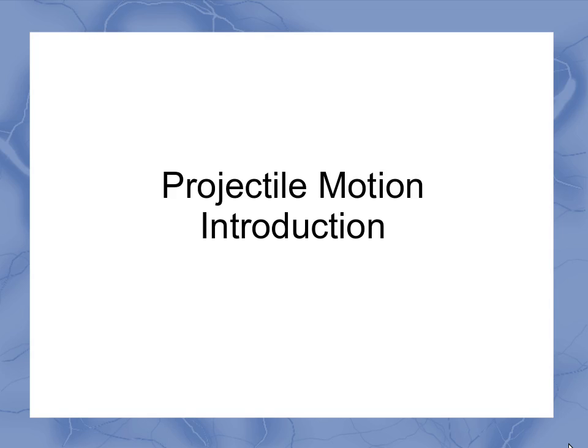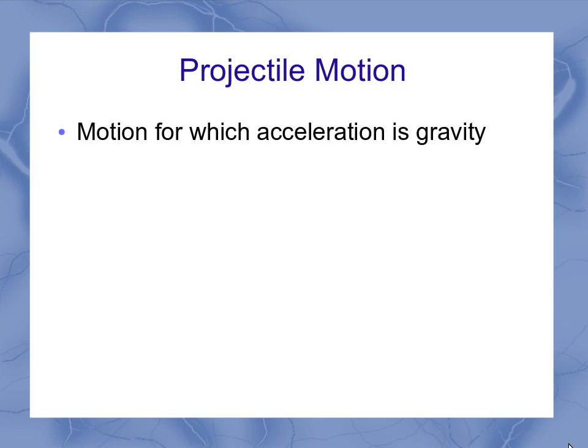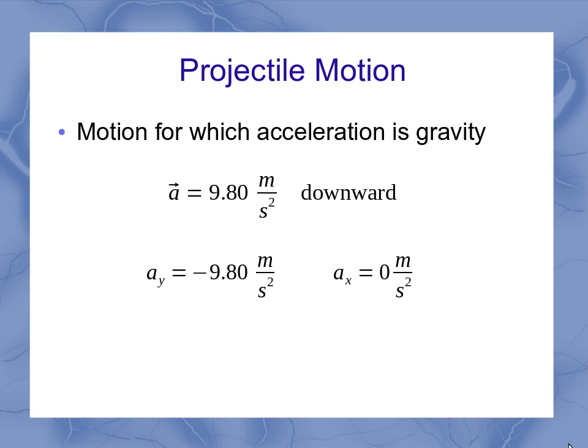Now we can look at a type of motion called projectile motion. In projectile motion, this is motion where the acceleration is due to gravity. Just like we saw in freefall motion, that means that I have an acceleration of 9.8 meters per second squared downward. But now I've got both my x and my y components of that vector that I wanted to take into consideration.